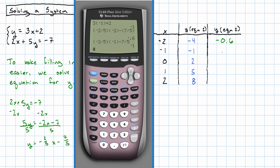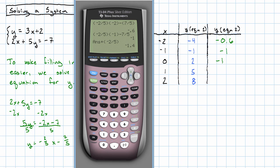Negative 2 fifths times negative 1 minus 7 fifths. That's negative 1. Oh, and then I'm just going to add negative 2 fifths each time. Negative 1.4, negative 1.8, negative 2.2.